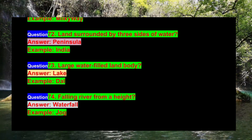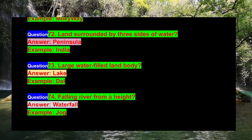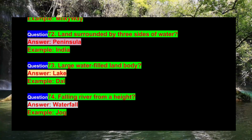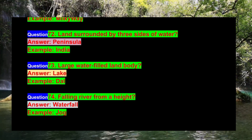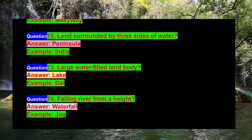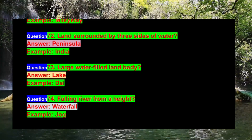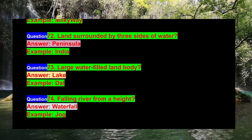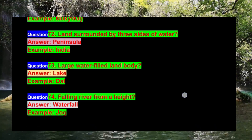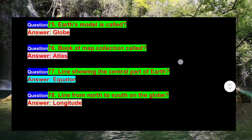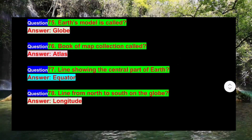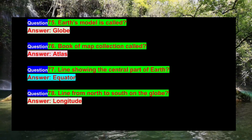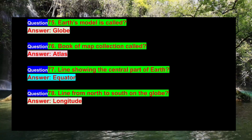Question 72: Land surrounded by three sides of water? Answer: Peninsula. Example: India. Question 73: Large water-filled land body? Answer: Lake. Example: Dal. Question 74: Falling river from a height? Answer: Waterfall. Example: Jog. Question 75: Earth's model is called? Answer: Globe. Question 76: Book of map collection called? Answer: Atlas.